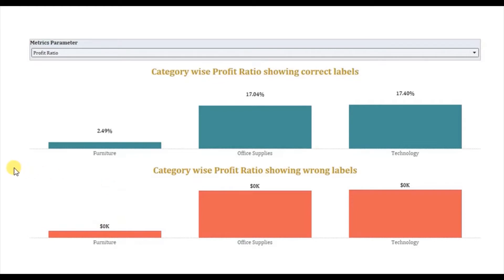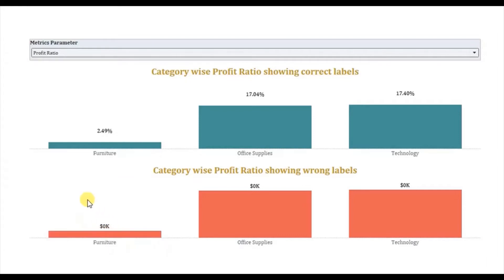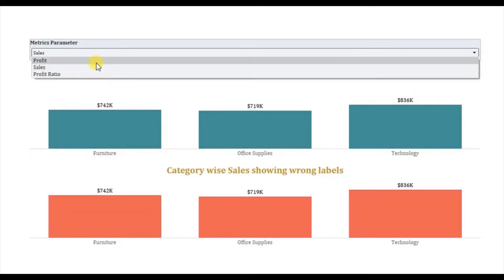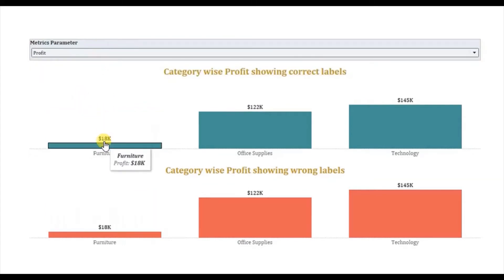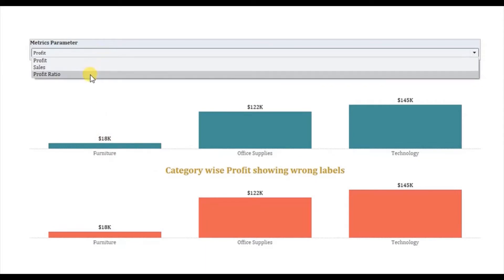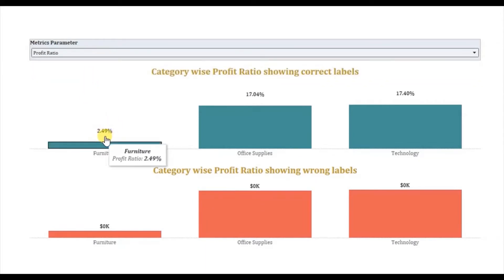So by default if we turn on labels, this is how we will get profit ratio in terms of dollars when we use a parameter to show different measures. Now let's jump to Tableau and see how to show dynamic measures with different number formats — where sales and profit are correctly shown in terms of dollars and profit ratio is correctly displayed in percentage format.